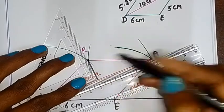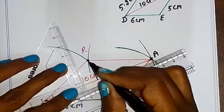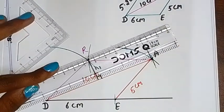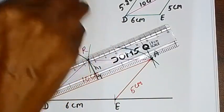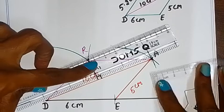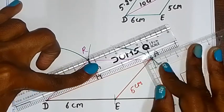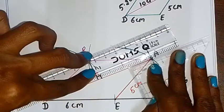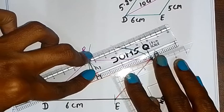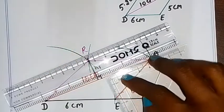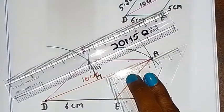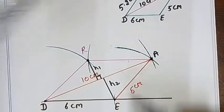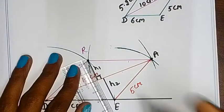Here we have the two triangles sharing the diagonal. We use the set square to find the perpendicular heights for each triangle. We measure height 1 and height 2 along the diagonal. Height H1 equals 1.9cm and height H2 equals 2.3cm.